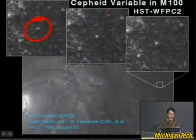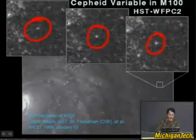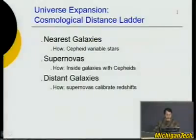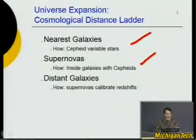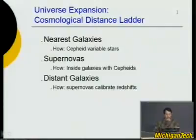You can see a picture of a Cepheid variable changing brightness — here it's not very bright, here a little brighter, and here brighter again. This is in the outskirts of M100, a spiral galaxy used to calibrate Hubble's constant. Where there are both Cepheid variables and supernovae, we can calibrate how bright supernovae are. Some supernovae are thought to be of relatively the same brightness, allowing us to calibrate redshifts out into the distant universe and determine how far away things are.